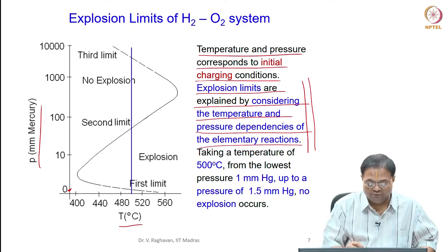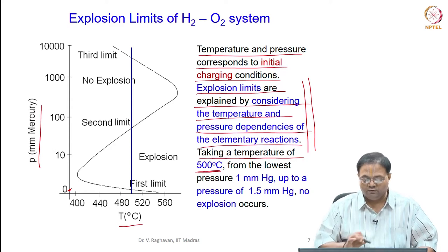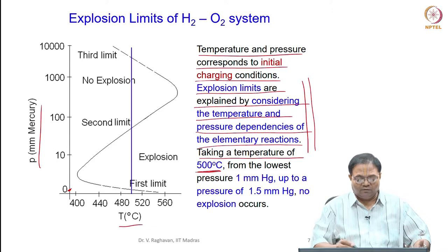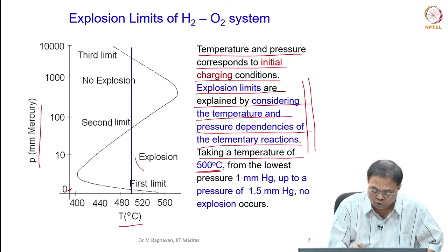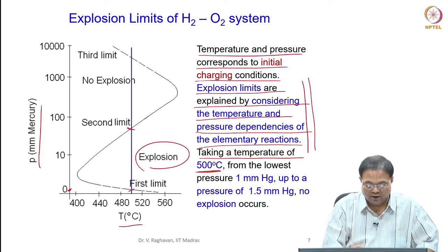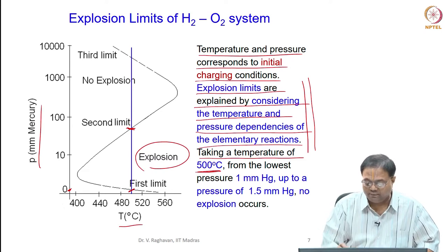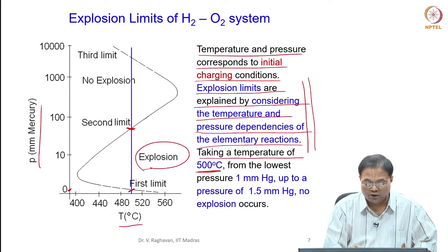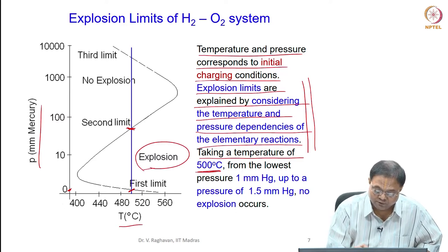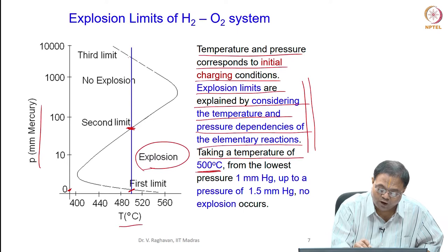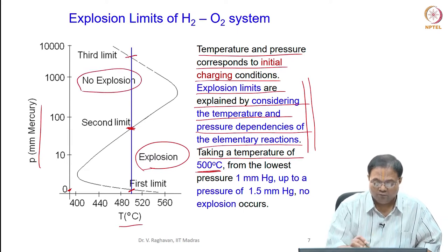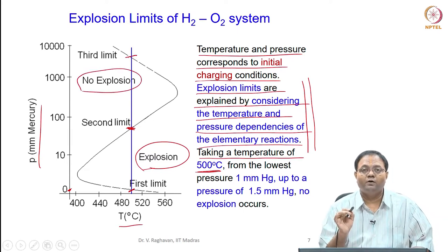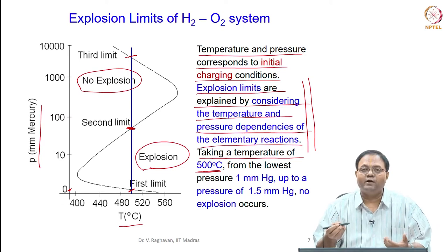How to go about analyzing it? The vertical blue line I have drawn corresponds to a temperature of 500 degrees centigrade. At this 500 degrees centigrade, when I say explosion occurs, the temperature is in between this point and that point. From the vertical line I have drawn two horizontal lines - when the pressure is between these two points for the given temperature of 500 degrees, explosion occurs.